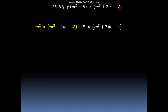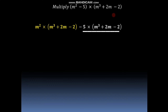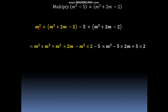We have to multiply the second polynomial by each term in the first polynomial. The first term in the first polynomial is m square, so we multiply the second polynomial m cube plus 2m minus 2 by m square. The second term in the first polynomial is minus 5, so we multiply the second polynomial by minus 5, giving minus 5 into m cube plus 2m minus 2. We multiply each term in the bracket: m square into m cube, plus m square into 2m, minus m square into 2. Similarly, minus 5 into m cube, minus 5 into 2m, and minus 5 into minus 2.